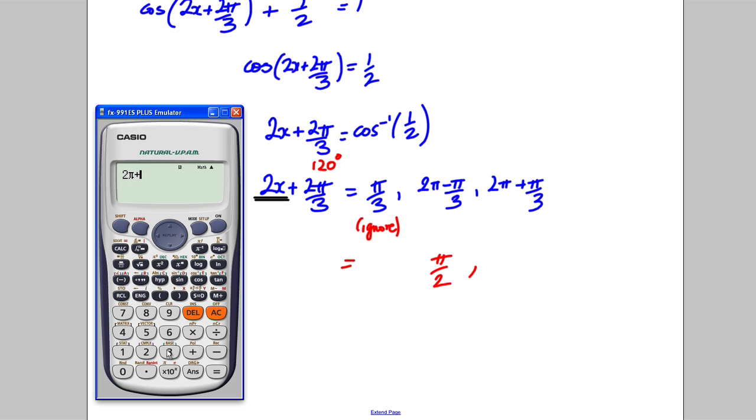And the last one I would have 2 pi plus pi over 3, and then I'm going to take off 2 pi by 3, so take off 2 pi over 3, and then I'm going to half it, so divide by 2, I get 5 pi by 6. So 5 pi by 6.